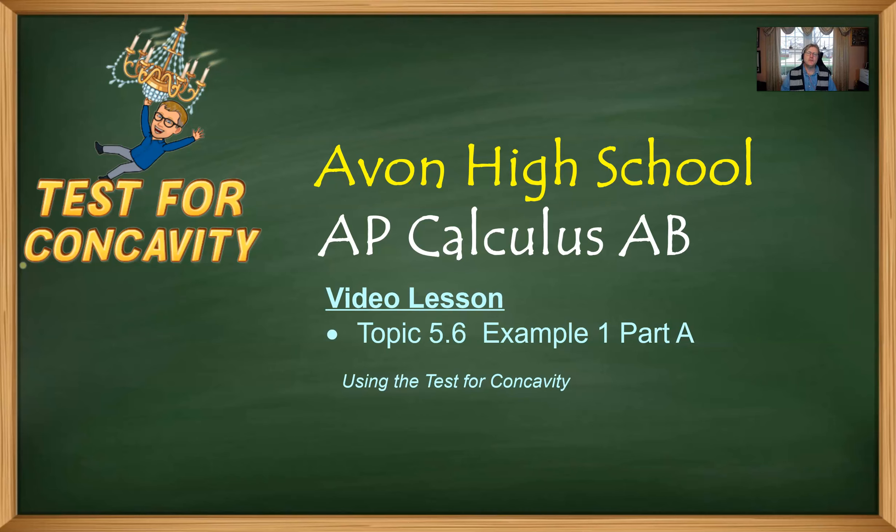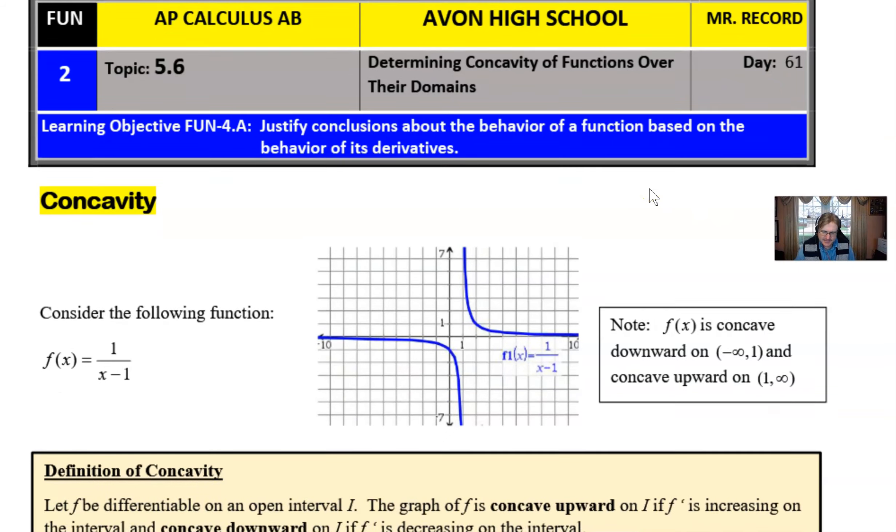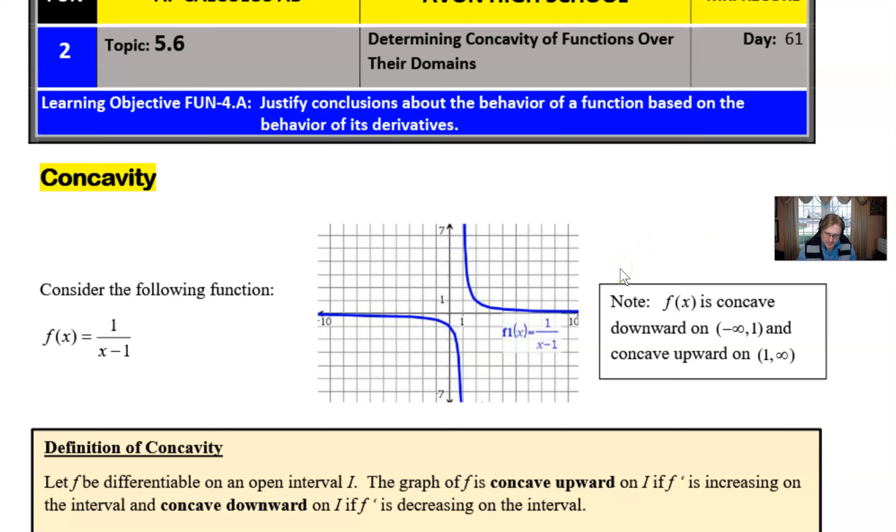We're going to talk about a new feature of a graph at this point and talk about how we can analyze functions to see if they display this certain feature. So let's take a look at some preliminary information before we work through example one part a. So concavity, it's not something that your dentist tells you that you have a problem with your teeth. This is just a little bit different and I'm going to start by displaying a very interesting graph f of x equals one divided by x minus one. So we have that curve sketched here and you'll note that in the box I jump right to it and say hey f of x is concave downward on the interval negative infinity to positive one and he's concave upward on the interval one to infinity.